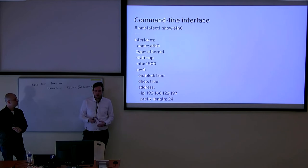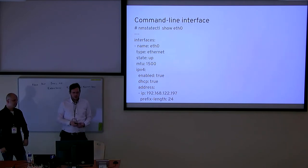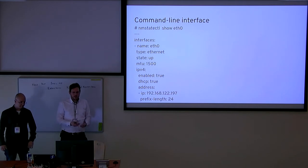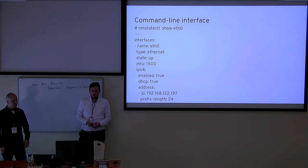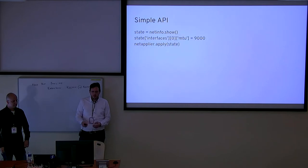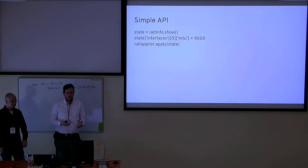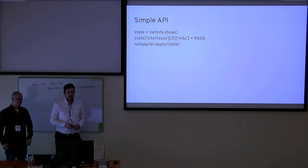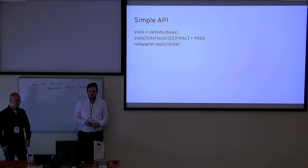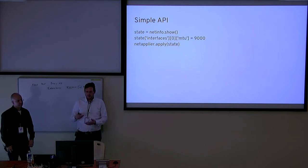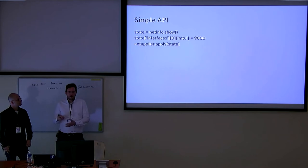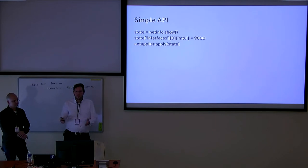We can use the CLI to show what the state would look like. Here you have the reporting — you get the current state of eth0, and then you can apply this to a different machine and only change the interface name. If you want to use the API, it's also very simple — basically the same methods. You have a method to get the current state, netinfo show, and you have apply to apply the state. For example, if you just want to change the MTU, you take the current state, change the MTU value, apply it, and then afterwards the MTU will be changed. As a human, you can easily look at the JSON configuration of the current host system. It's very self-explanatory — you just see what you need to do and don't have to dig through different tools.